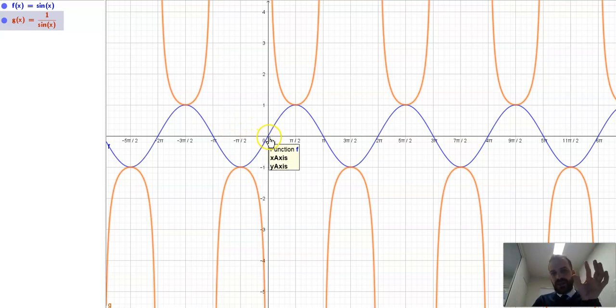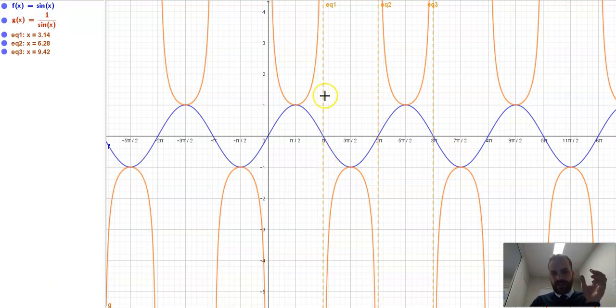Sin x had a root here, or an x-intercept here, here, here, here. Now when we take the reciprocal, those are going to be asymptotes. Here, here, here with these orange dotted lines, obviously heaps more asymptotes all the way down, and all the way down here as well.